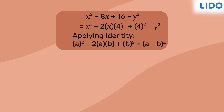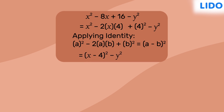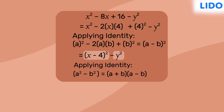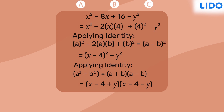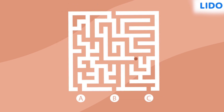On applying the identity, our expression becomes (x − 4)² − y². Note that if we take (x − 4) as a single term, say a, and y as another term b, then we can apply the identity a² − b² = (a + b)(a − b). And there, we have successfully factorized the expression.